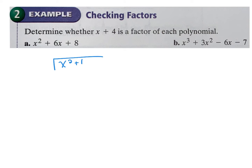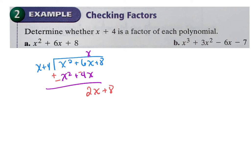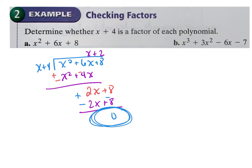Divide them out just like we did before. Go through the process and ask: is this a factor? The first one is a factor. On the second example they get a remainder of 1, so the second polynomial is not a factor. If your remainder is 0, the answer is yes; if it is anything other than 0, the answer is no — not a factor.